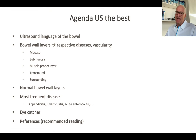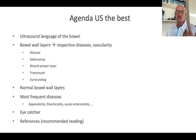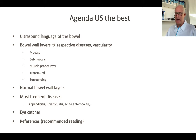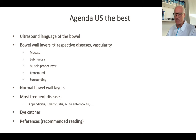The agenda is the ultrasound language of the bowel, the bowel wall layers regarding the anatomical structures: mucosa, submucosa, muscle proper layer, transmural inflammation and infiltration and the surroundings. The normal bowel wall layers and the most frequent diseases. Some eye-catchers and recommended reading.